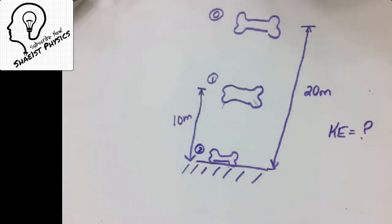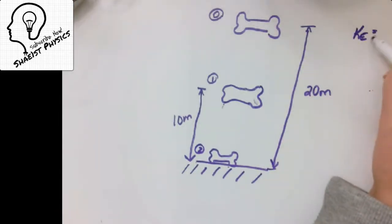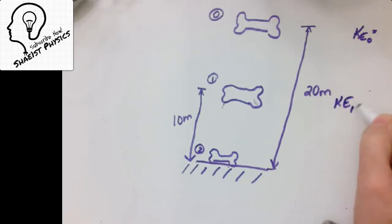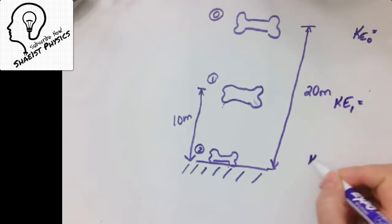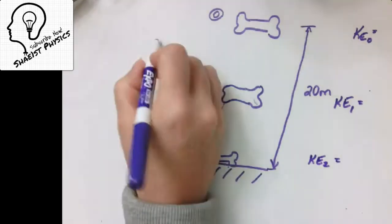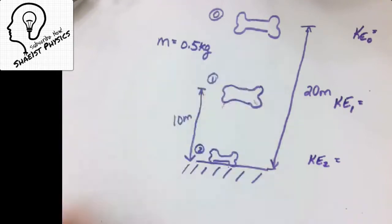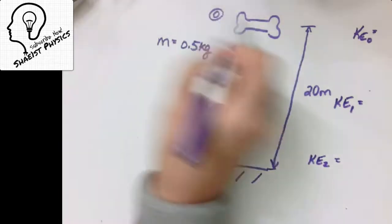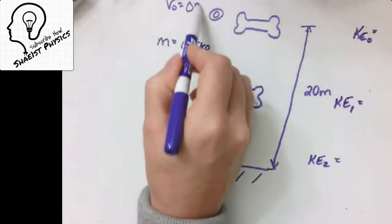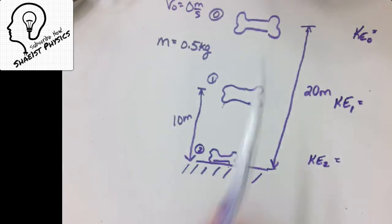Let's look at the kinetic energy of this bone at moments 0, 1, and 2. The mass of the bone is 0.5 kilograms. The velocity of the bone at the top is 0 meters per second because we're not throwing it down — we're just releasing it, dropping it. So instantaneously right there it's 0 meters per second.